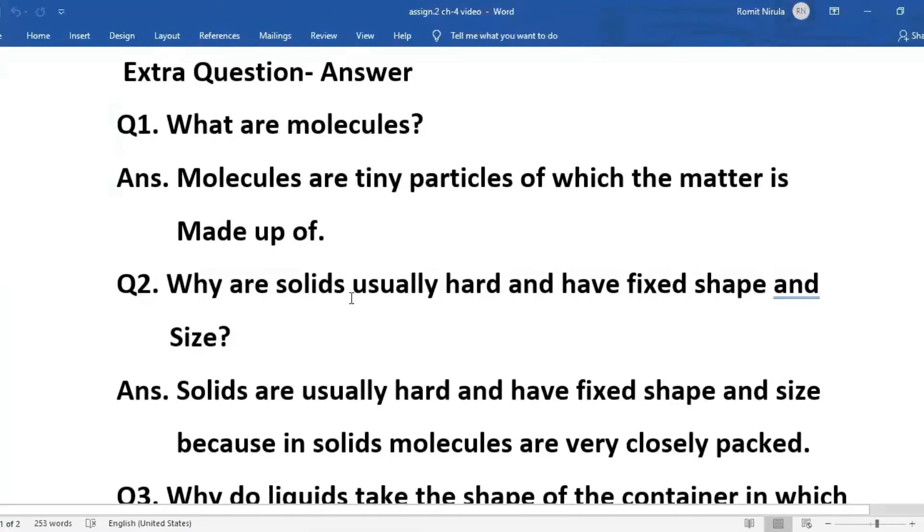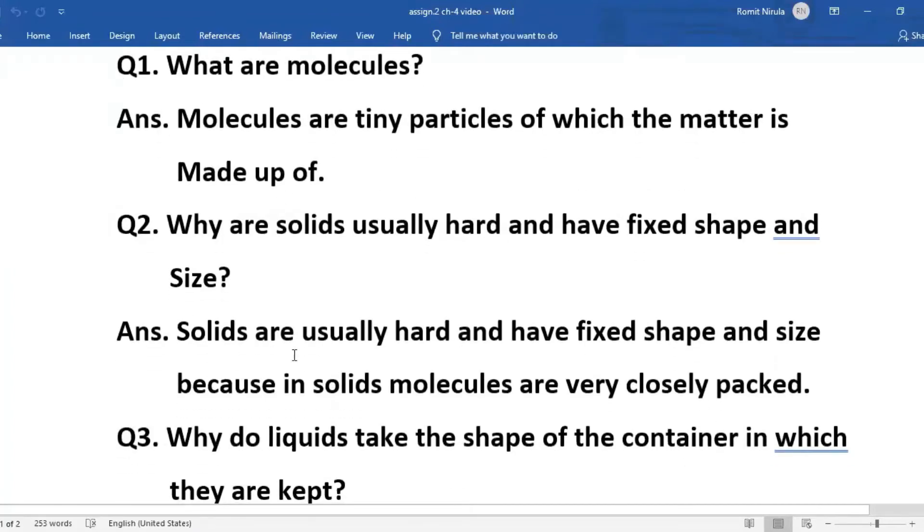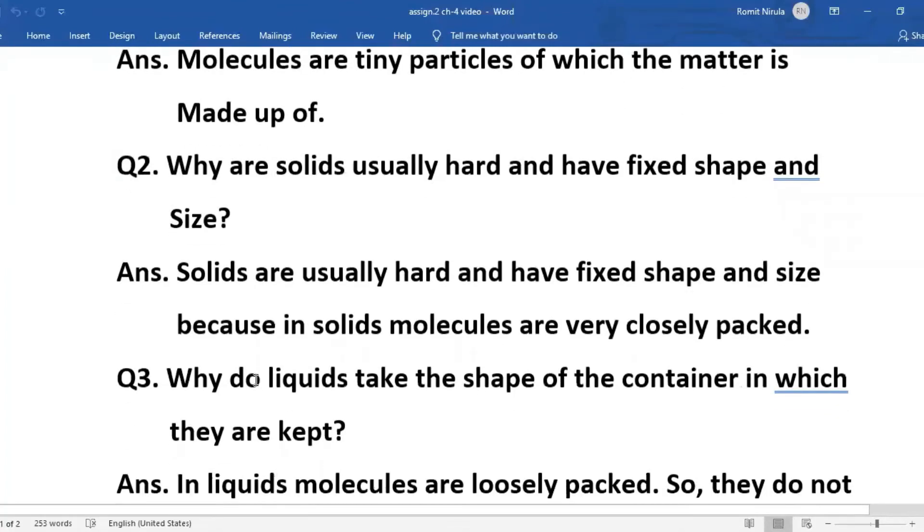Number two: Why are solids usually hard and have fixed shape and size? Solids are usually hard and have fixed shape and size because in solids, molecules are very closely packed. There is little space, or you can say there is no space for the movement of molecules in solids.